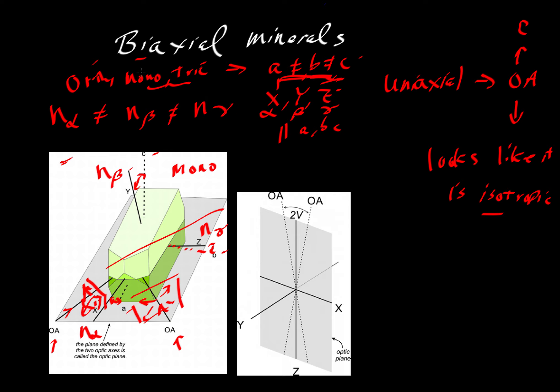So when you look up an orthorhombic, monoclinic, or triclinic crystal in a book like Deerhali and Zussman or some other optical mineralogy reference, you'll see three distinct values of the index of refraction that are listed that correspond to these x, y, and z directions.